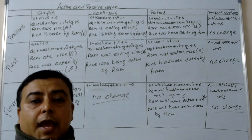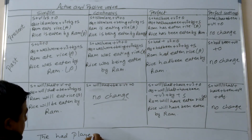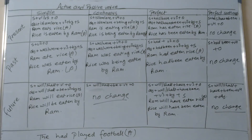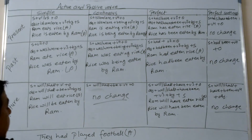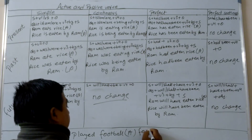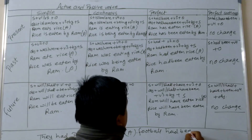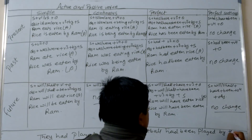In this way, we can change active voice into passive voice. For the next example, they had played football — active voice. Change into passive voice: football had been played by them. Here, had plus V3 is used in past perfect tense, that's why we change this into passive voice as football had been played by them.